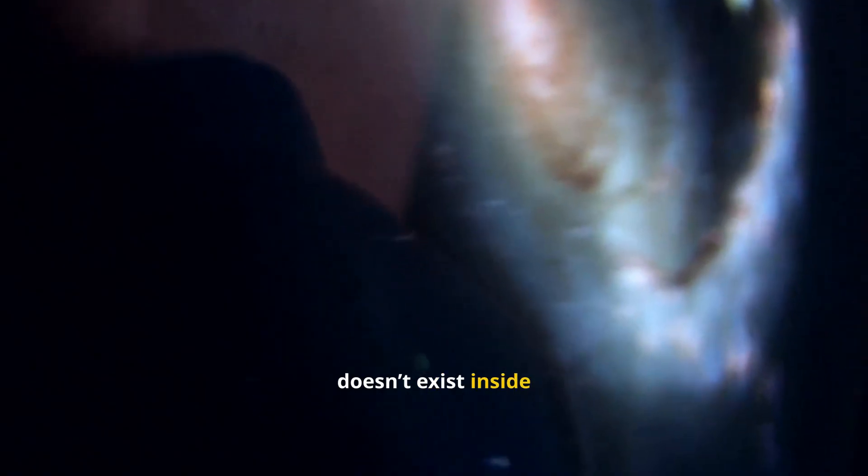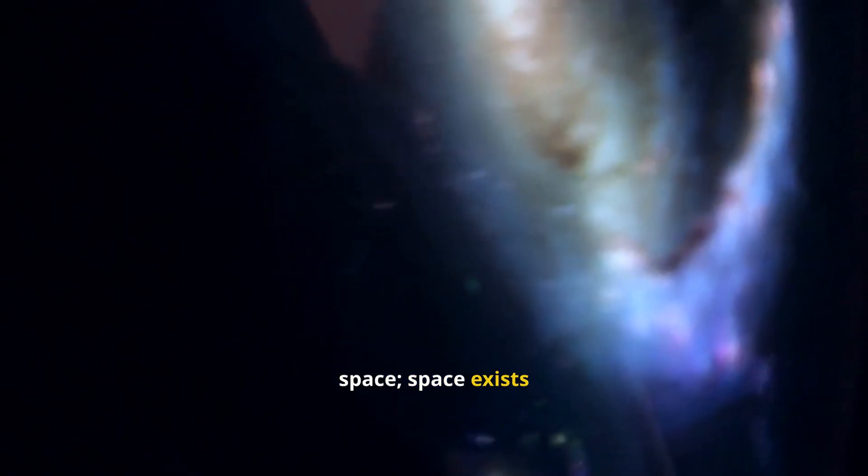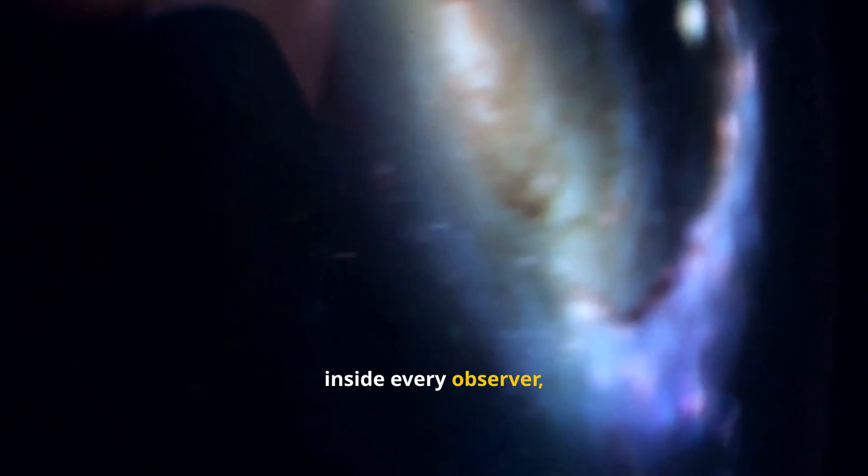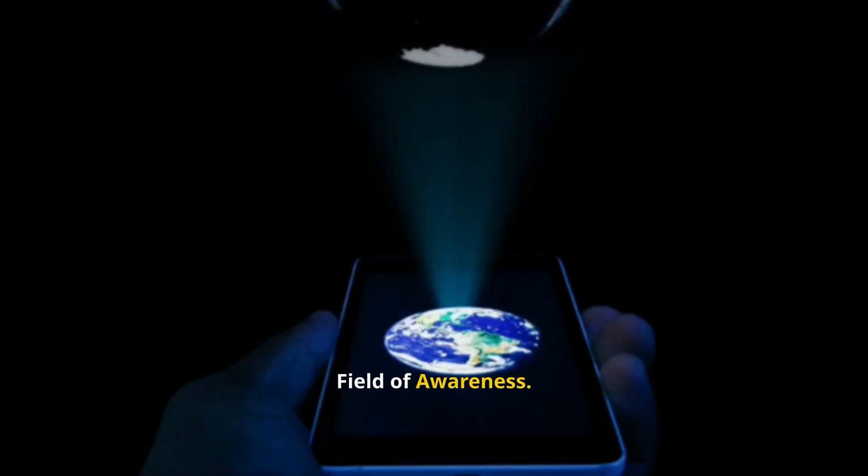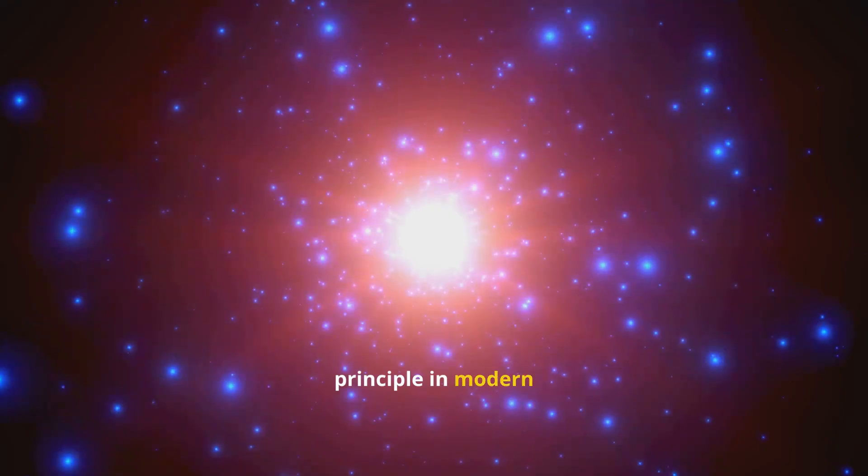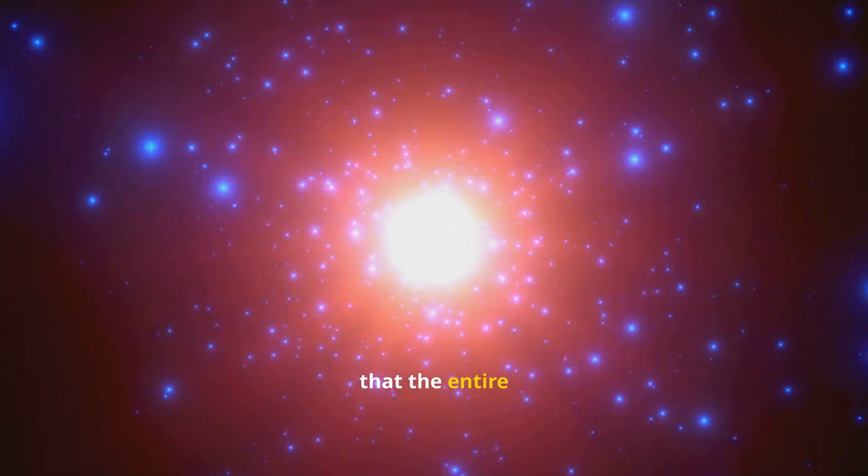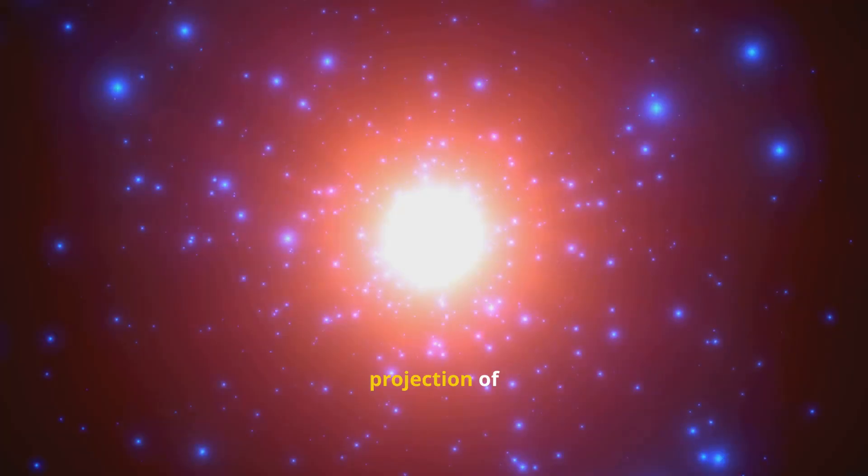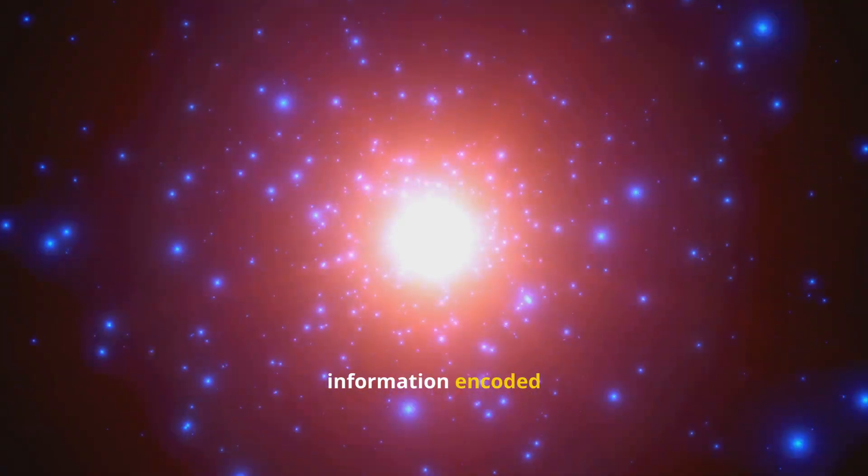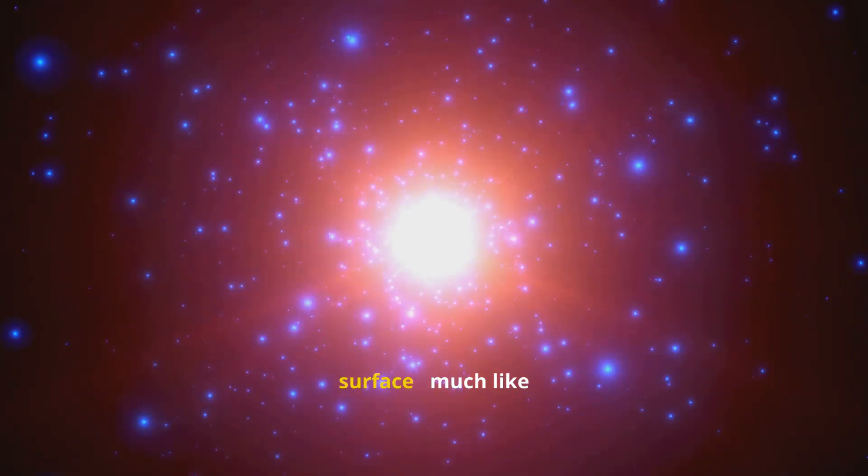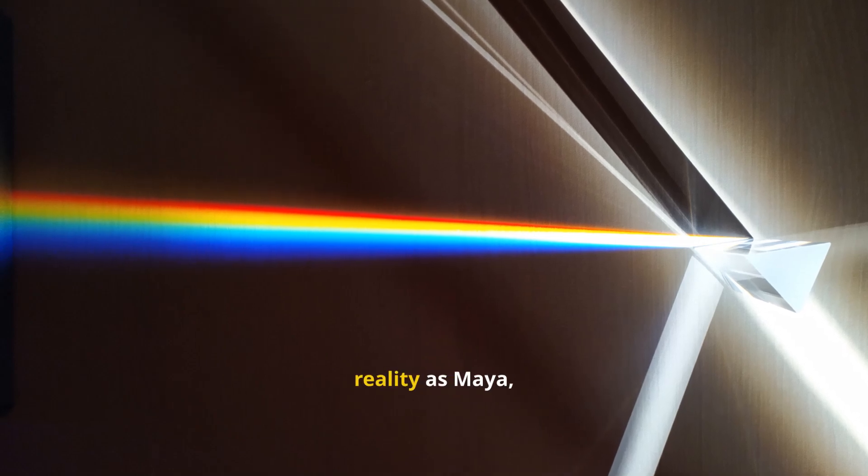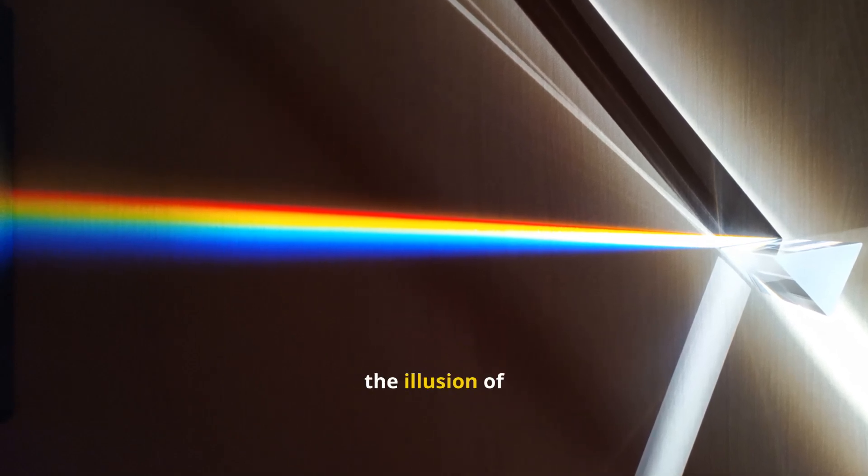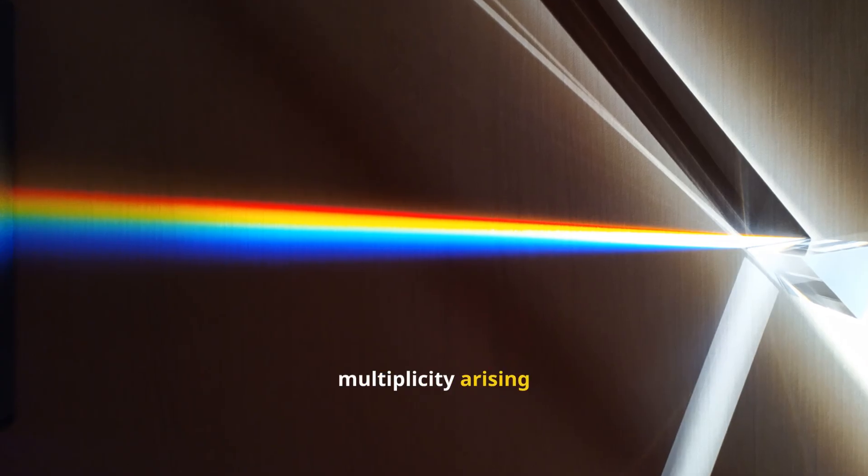In this sense, every observer doesn't exist inside space. Space exists inside every observer as a dimension of perception. The holographic field of awareness. The holographic principle in modern physics proposes that the entire three-dimensional universe may be a projection of information encoded on a two-dimensional surface, much like a hologram. This aligns with mystical descriptions of reality as maya, the illusion of multiplicity arising from unity.